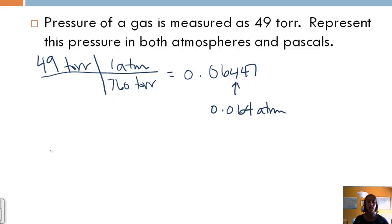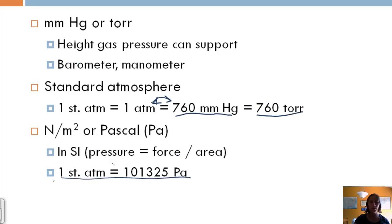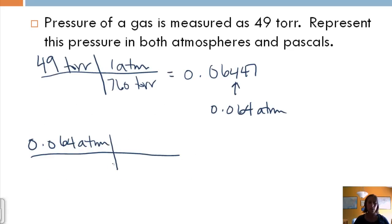Now, if I want to go to pascals, there's a direct conversion between atmospheres and pascals, so it's easier to just take our answer from the first part and then go to pascals. So for every one atmosphere, there are 101,325 pascals. And so I'm going to take my answer in atmospheres and multiply, and I get 6,532. So still going with our two significant figures from the original, I've got 6,500 pascals.